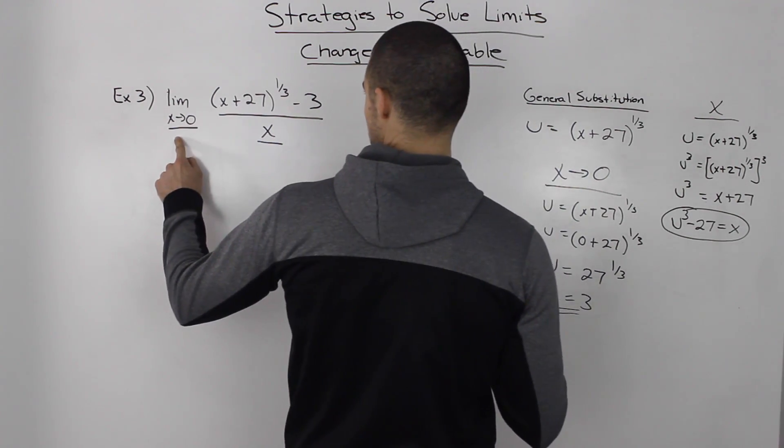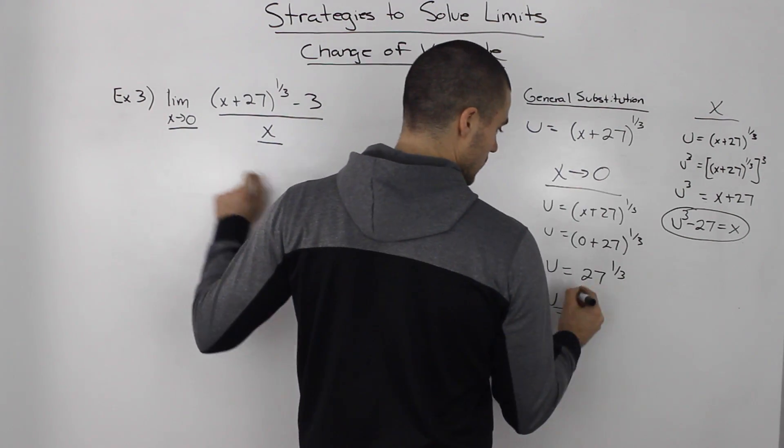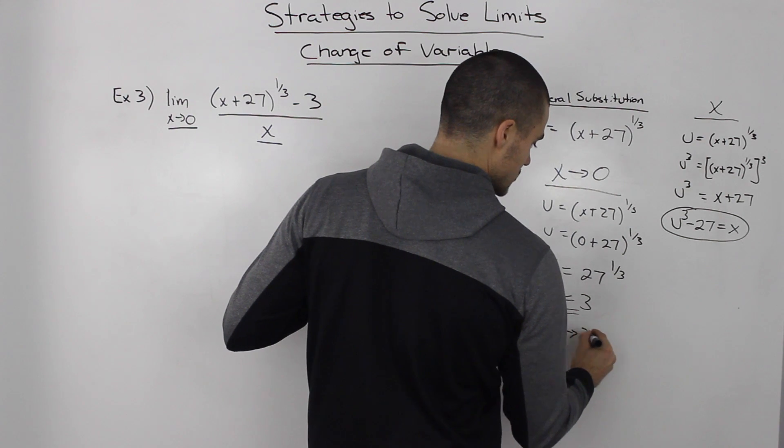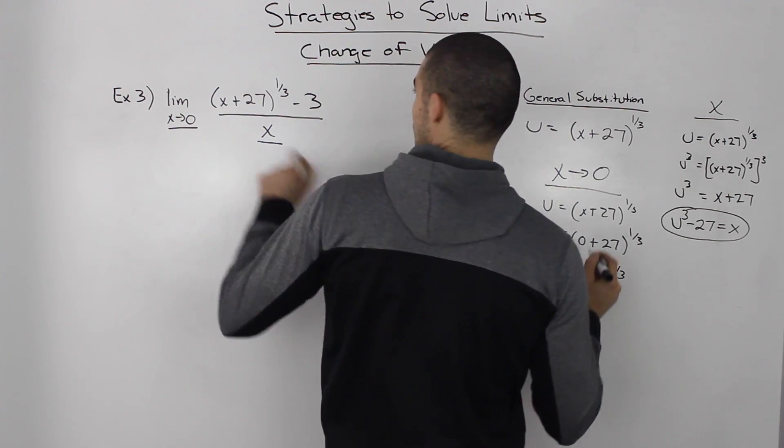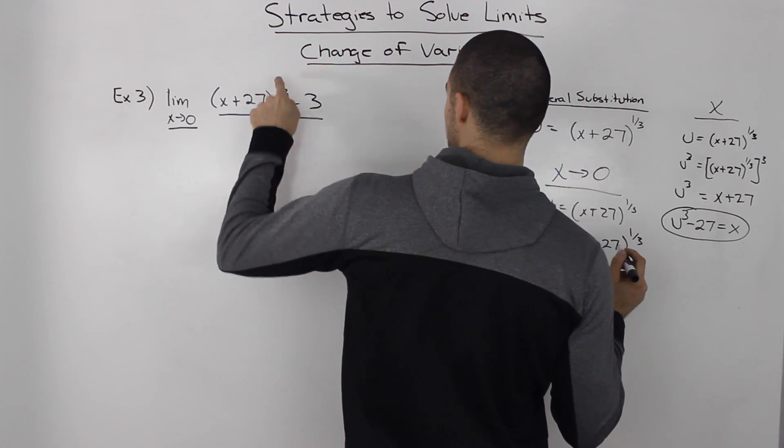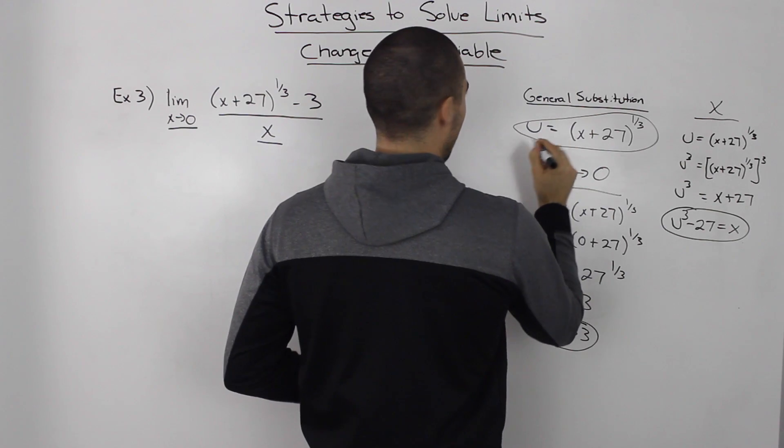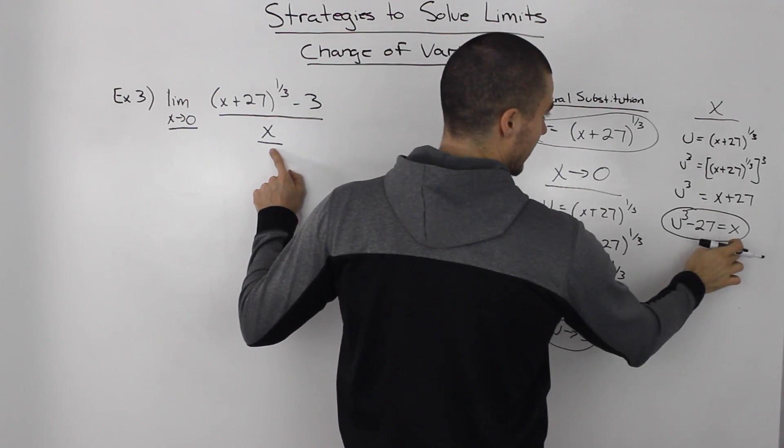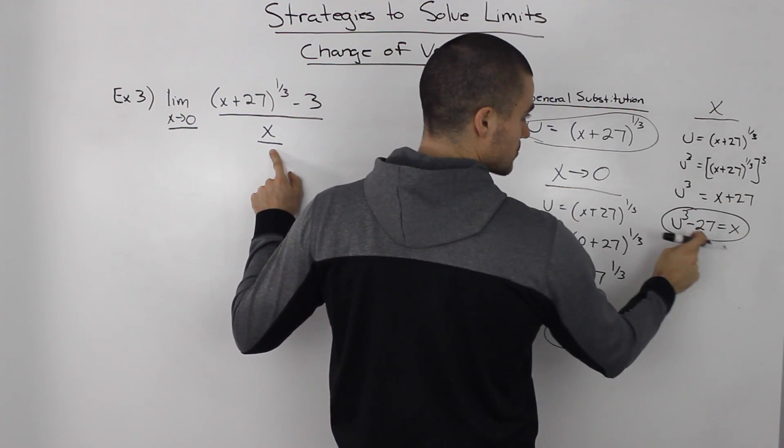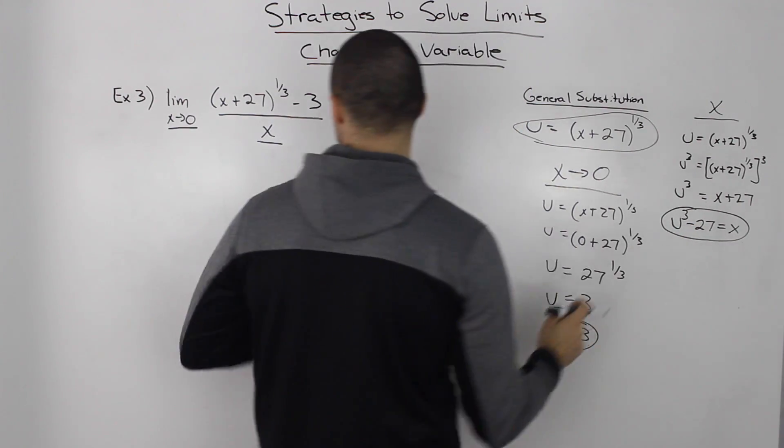So we have a substitution for x→0, which is equivalent to u→3. We have (x+27)^(1/3) = u. And we have x = u^3 - 27. Let's substitute these in to get our new limit.